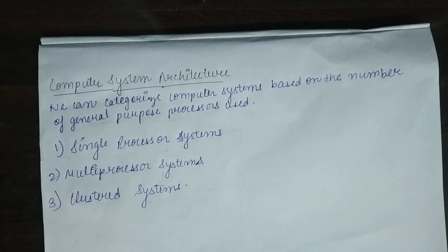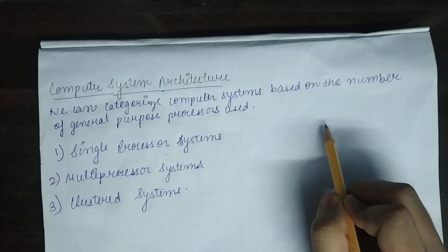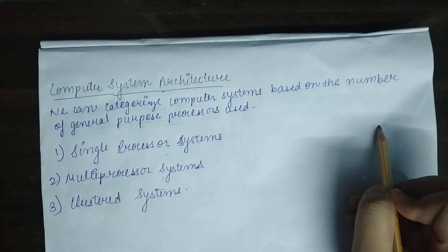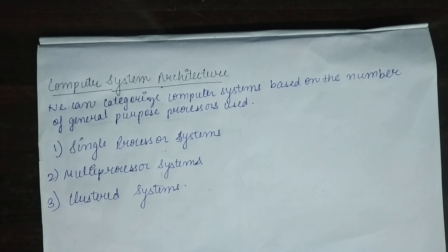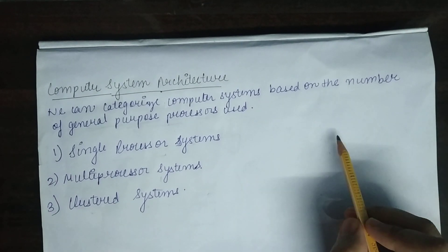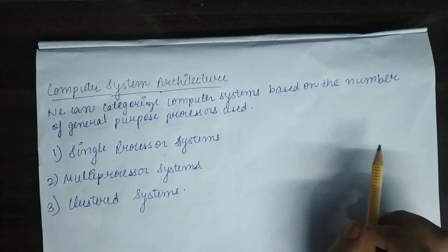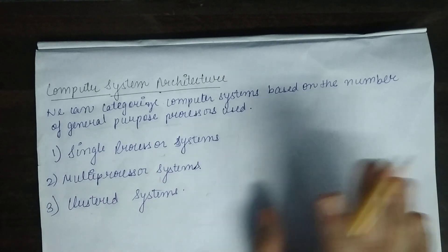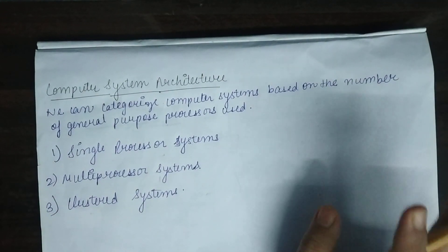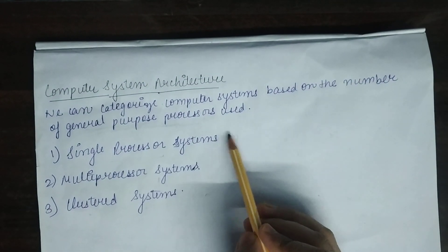We also have special purpose processors, which run a limited instruction set and do not run user processes. For example, when you press a key on a keyboard, a microprocessor inside your computer converts that keystroke into a code and sends it to the CPU. That microprocessor is special purpose because it has a specific task. The operating system cannot communicate with those special purpose microprocessors — it only communicates with the general purpose processor.